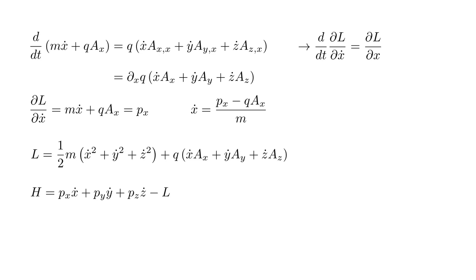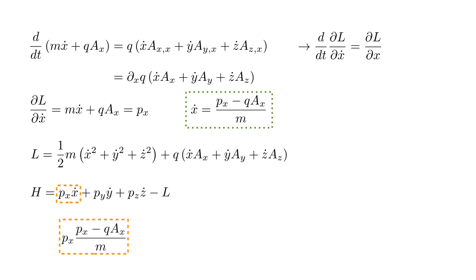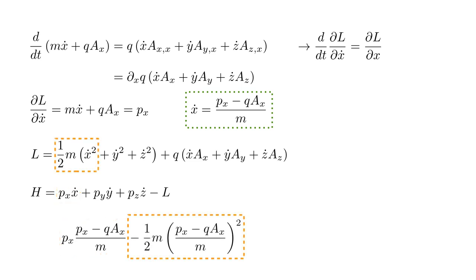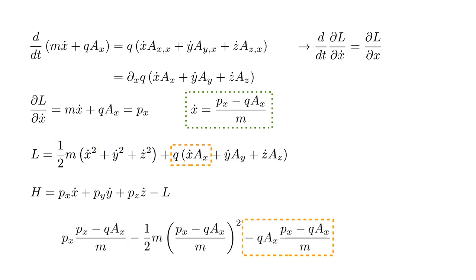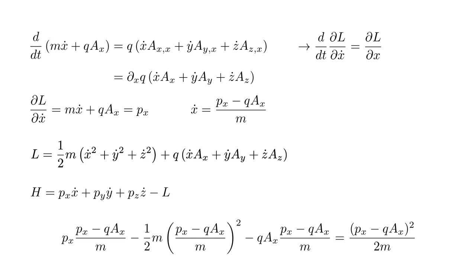Given L, we can form the Hamiltonian: H equals P_X X dot plus P_Y Y dot plus P_Z Z dot minus L. Let's look at the X dot terms. For P_X X dot, we substitute for X dot our expression in terms of P_X and A_X. Minus L gives us a minus one-half M X dot squared term, into which we substitute for X dot, and a minus Q A_X X dot term, into which we also substitute for X dot. After a bit of algebra, we end up with quantity P_X minus Q A_X squared over two M. In addition to this, H will have corresponding terms in P_Y, A_Y, and P_Z, A_Z.